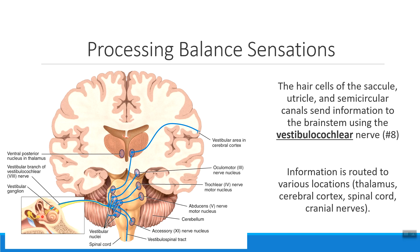Balance isn't processed quite the same way as our other special senses. Some of the information goes to the cerebral cortex, but a lot goes to the spinal cord, the cerebellum, and the brain stem. Balance involves many different parts of your body and skeletal muscles to keep you upright. Unlike taste or smell, there's not just one place in the cerebral cortex where this information is sent — we send it all over.